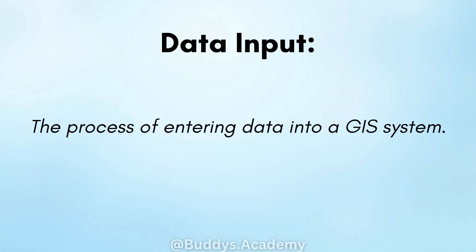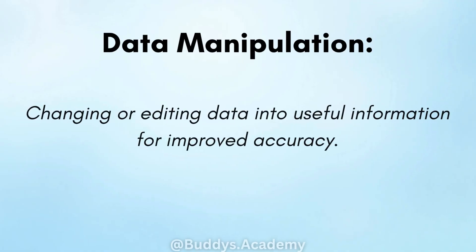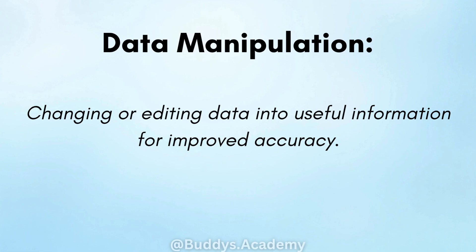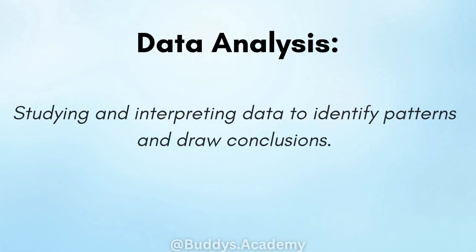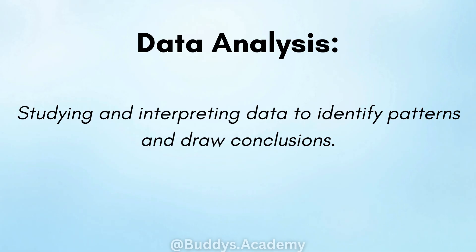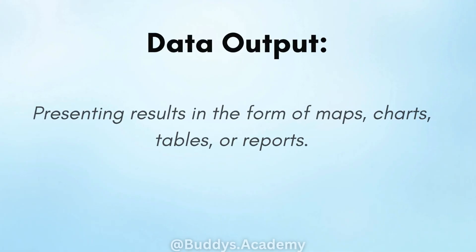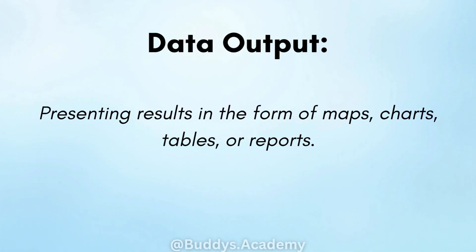Data input: this is the process of entering data into a GIS system. Data manipulation: this is changing or editing data into useful information for improved accuracy. Data analysis: this is studying or interpreting data to identify patterns and draw conclusions. Data output: this is presenting results in the form of maps, charts, tables or reports.